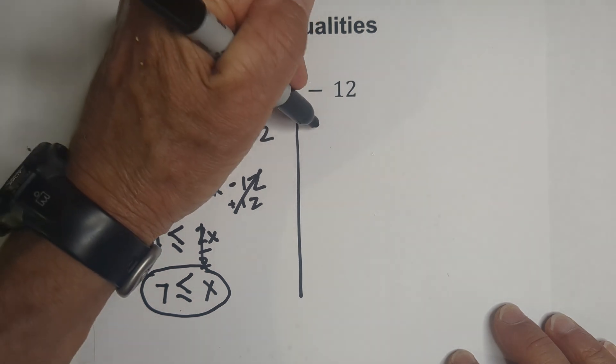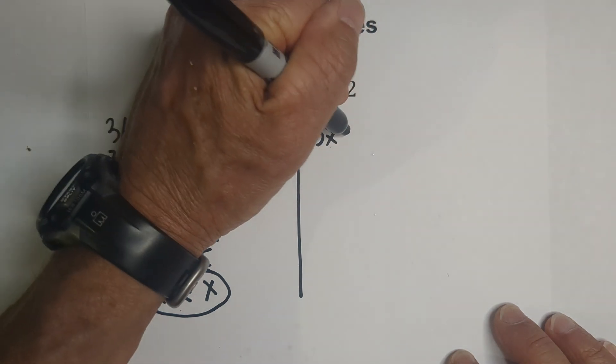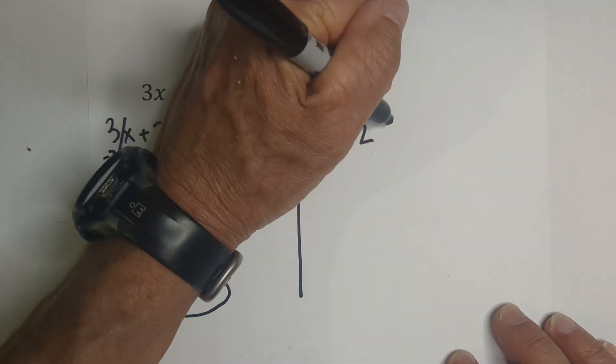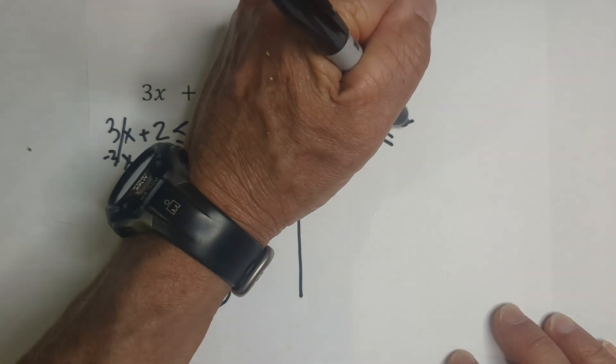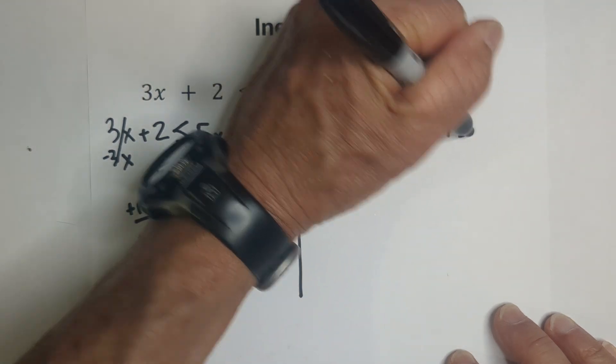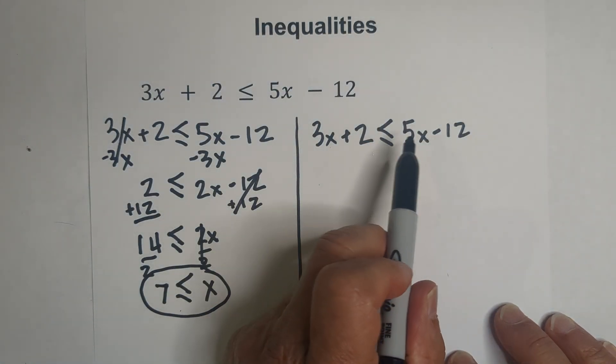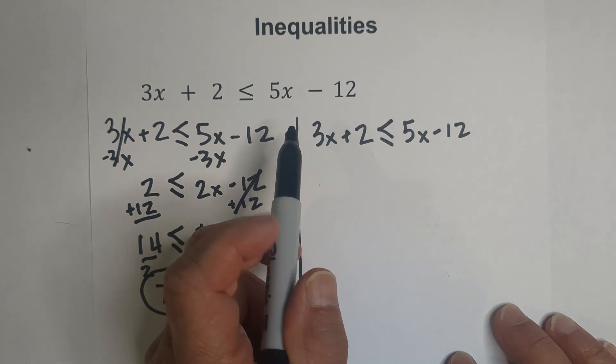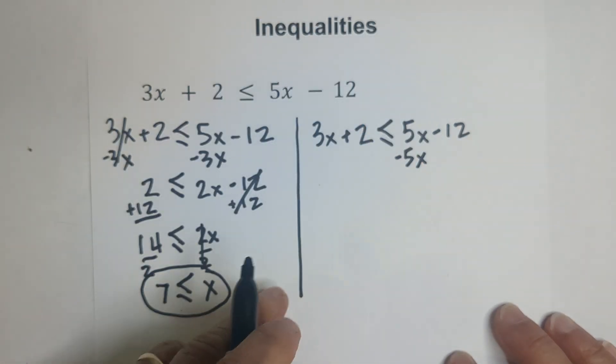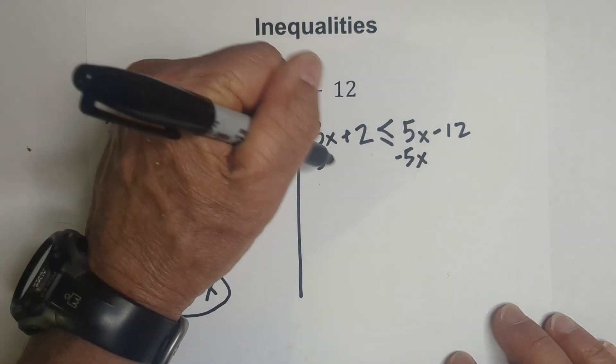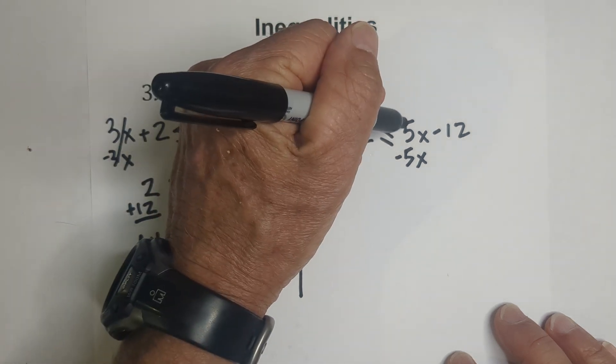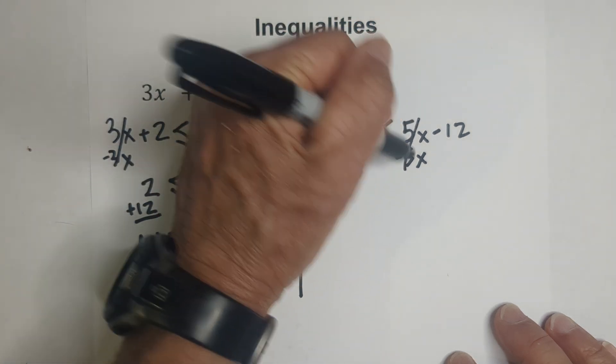Or I can do it the opposite way and you'll still get a similar result. Now let's move variables to the left. In order to do that, I've got to subtract a negative number. 5x minus 5x, these cancel, I'll bring down a negative 12.